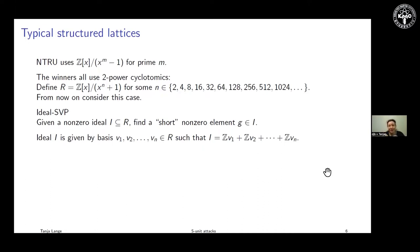The ideal SVP — shortest vector problem — involves an ideal as a subset of a ring. For an ideal, like a lattice, you can define a basis. The bases are ring elements, and the ideal is the linear span of these basis elements. You have n-dimensional lattices with n vectors spanning an n-dimensional lattice, or equivalently you can view them as an ideal in the ring.